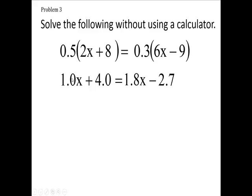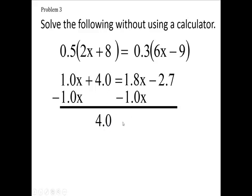On both sides subtract 1.0x. This gives me 4.0 on the left side. This equals, it's like 1.80 spending a dollar, that's like 80 cents left. When you subtract you get 0.8x minus 2.7.